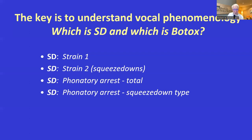Now let's go on to Botox. The first example of Botox side-effect weakness would be breathiness all by itself at fairly normal pitch. It might sound kind of like this — you can hear the voice is similar in pitch, but I'm having to take a breath more often and I'm blowing extra air. There's no strain, there are no stoppages. That's a weak voice from Botox.